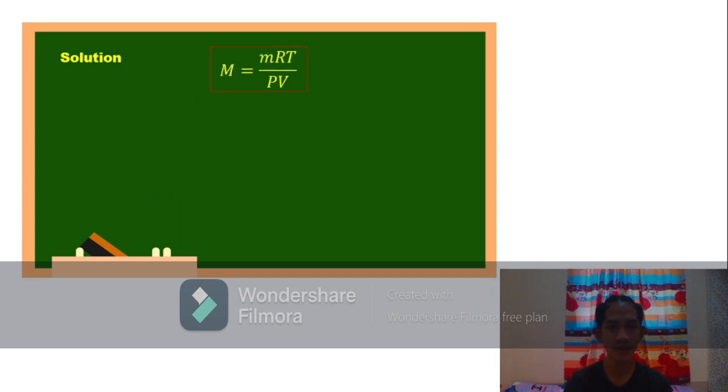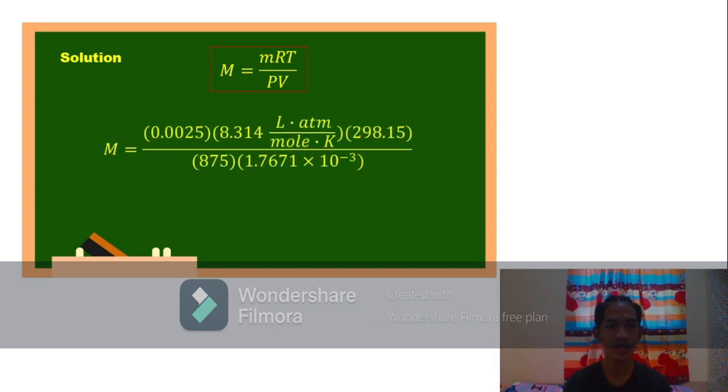Since this is our formula, we can now plug in all our values. Our mass which is 0.0025 times our gas constant which is 8.314 times the temperature which is 298.15 all over pressure of 875 times the volume which is equal to 1.7671 times 10 to the power of negative 3.